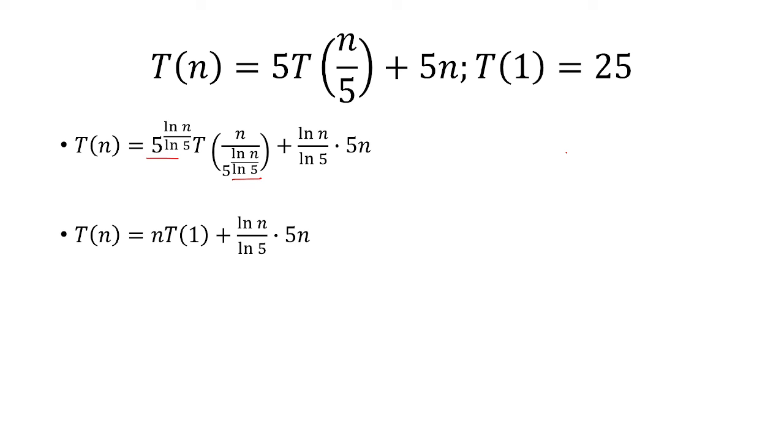Now T of 1 is equal to 25 so we're going to make that substitution and get our final answer as 25n plus ln of n over ln of 5 times 5n.